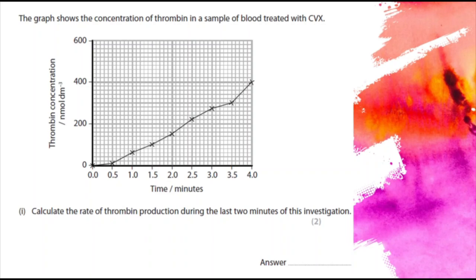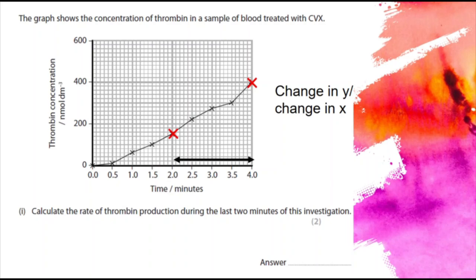It's asking us for only the last two minutes of the investigation. Whenever we calculate rate, all we're doing is looking at change in Y divided by change in X — you should always mark those on a graph if you can. At four minutes, the thrombin concentration is 400 nanomoles per decimetre cubed, and at two minutes it's about 150, so the change in Y is 250 because 400 minus 150 is 250.